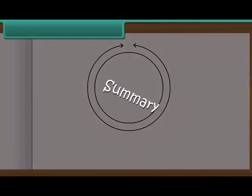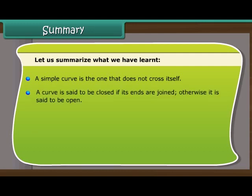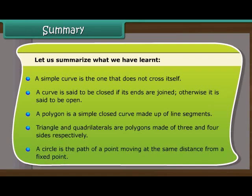Summary: Let us summarize what we have learned. A simple curve is the one that does not cross itself. A curve is said to be closed if its ends are joined. Otherwise, it is said to be open. A polygon is a simple closed curve made up of line segments. Triangle and quadrilaterals are polygons made of three and four sides respectively. A circle is the path of a point moving at the same distance from a fixed point.